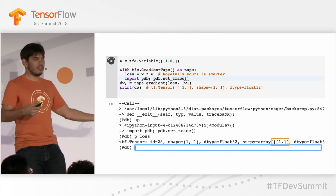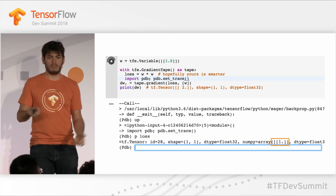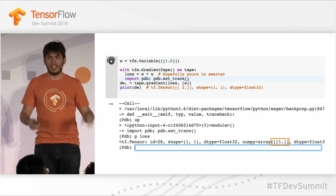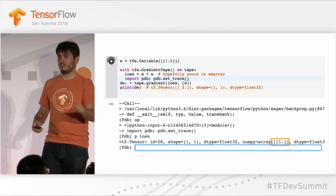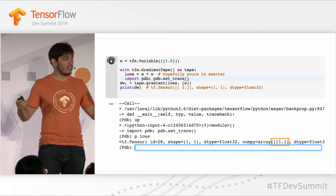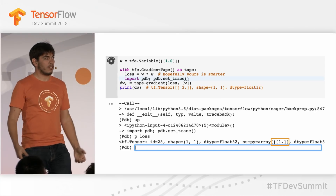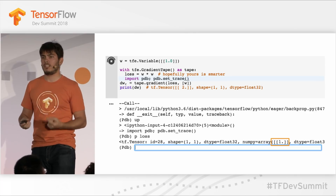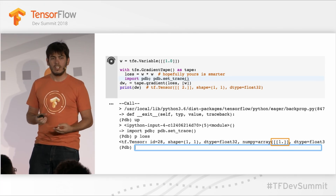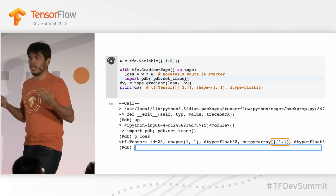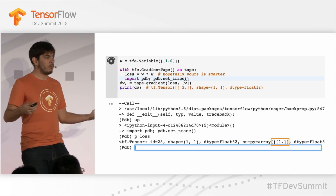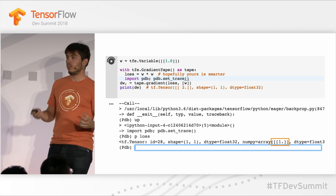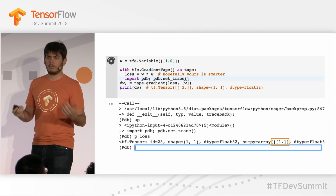When eager execution is enabled, you can take any model code and add notes to drop into the Python debugger anywhere you want. Once you're in the Python debugger, you have the full power of debugging available. You can print the value of any tensor, change the value of any tensor, run any operation on any tensor. This will hopefully empower you to really understand what's going on in your models and fix any problems you have.